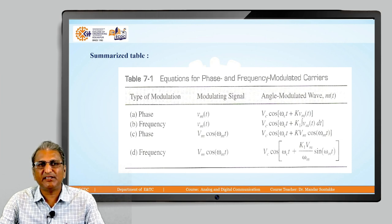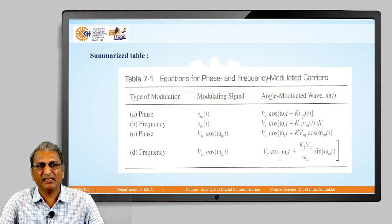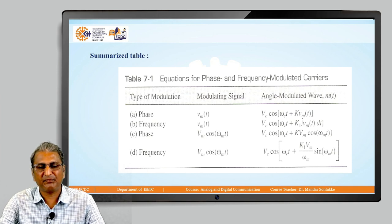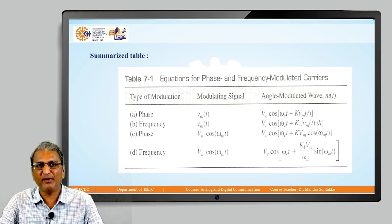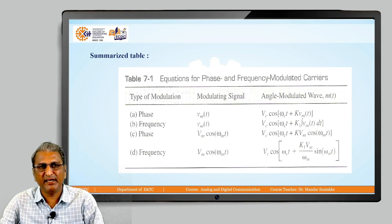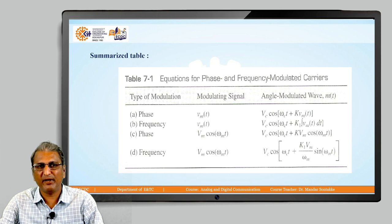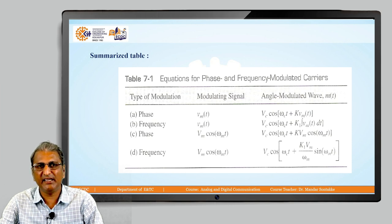In short, these are the equations for phase and frequency modulated carriers. First, the phase modulating signal is V_m(t) and the angle modulated signal is V_c * cos(omega_c*t + K*V_m(t)). Second, the frequency modulating signal is V_m(t) and the angle modulated signal is V_c * cos(omega_c*t + K1 * integral of V_m(t) dt). Third, for a sinusoidal modulating signal V_m*cos(omega_m*t): the PM signal is V_c * cos(omega_c*t + K*V_m*cos(omega_m*t)), and the FM signal is V_c * cos(omega_c*t + (K1*V_m / omega_m) * sin(omega_m*t)).